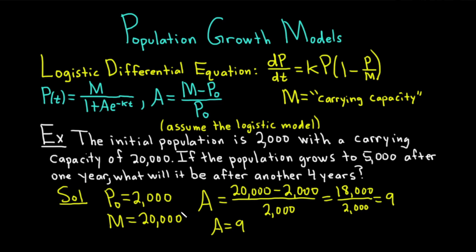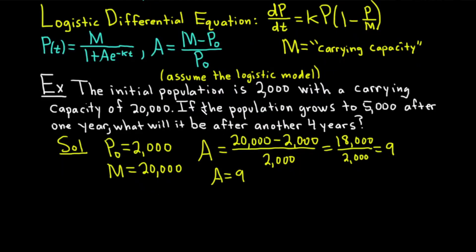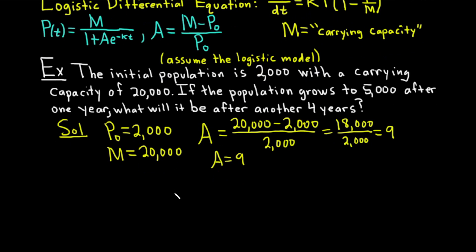Now we have A and M. We can plug it all into P(t), and we'll have almost everything we need, but not quite. Plugging everything in, we have P(t) equals 20,000 over (1 plus 9e to the negative kt). The problem is we don't have a complete picture for our function because we're missing k.